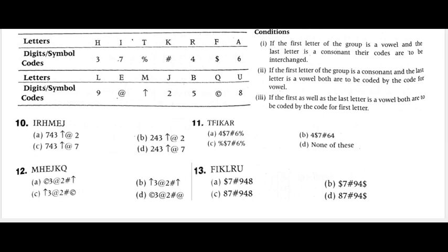If the first letter of the group is a vowel and the last letter is a consonant, their codes are interchanged — meaning the consonant's code is written first, the vowel's code after. If the first letter is a consonant and the last is a vowel, both are to be coded by the code of the vowel. If the first as well as the last letter is a vowel, both are coded by the code of the first letter.